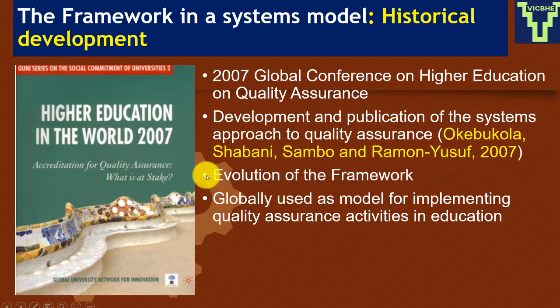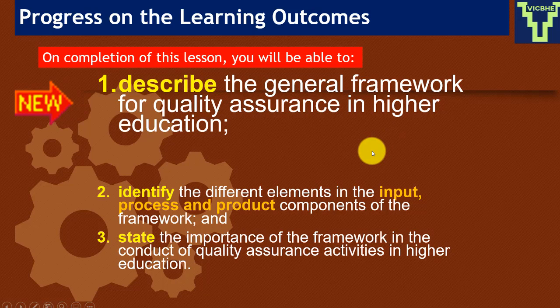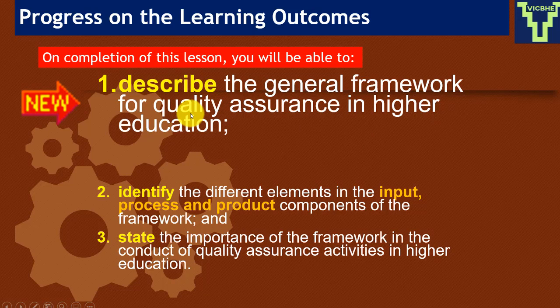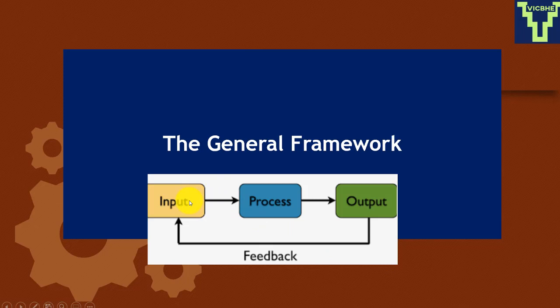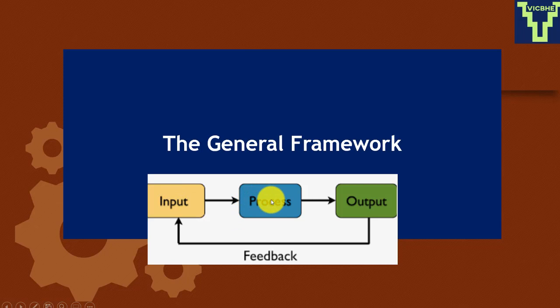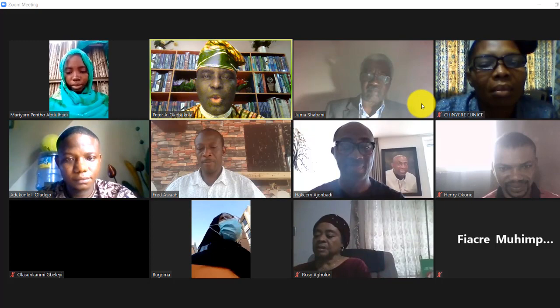The general framework for quality assurance in higher education takes a systems approach: you have the input, the process, the output, and the feedback. Let's get a group of participants and experts to tell us what the inputs into a university are, what the processes are, and what the outputs are. I'm going to turn to a group and get their views on the input elements, process elements, and output elements — including the co-developer of the framework.